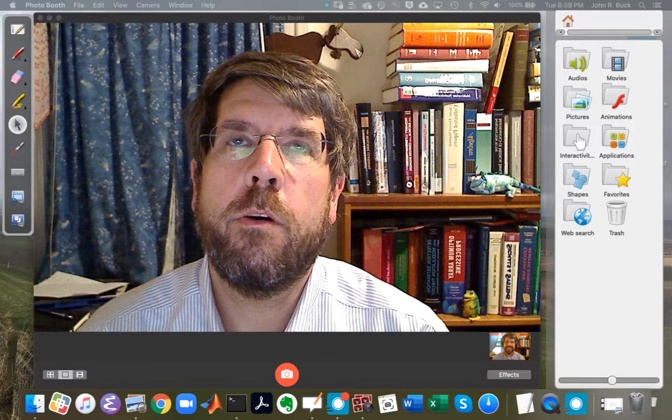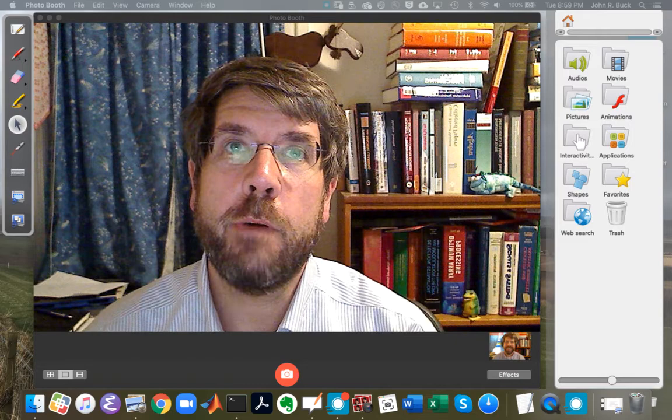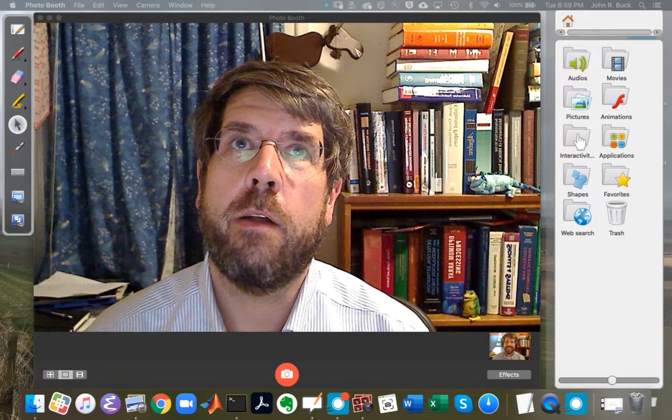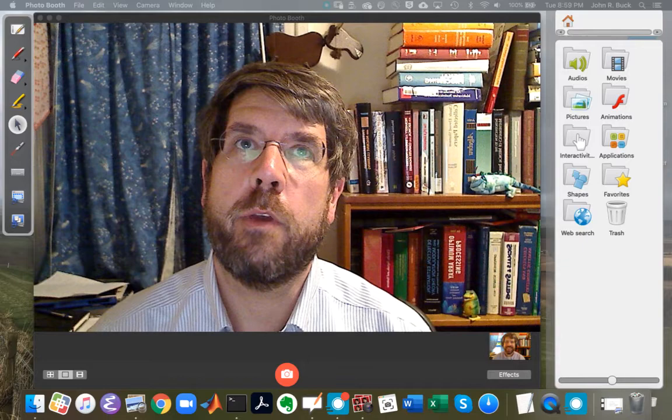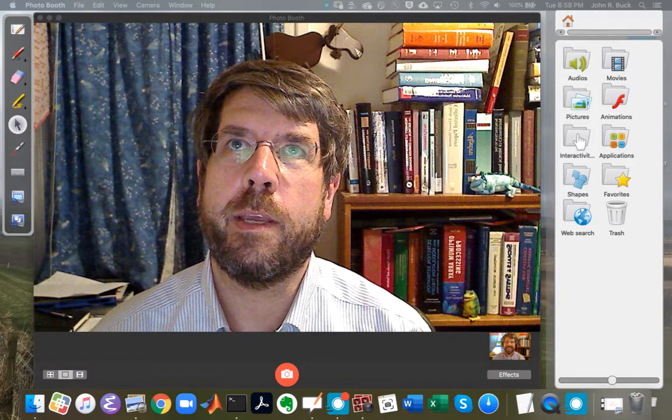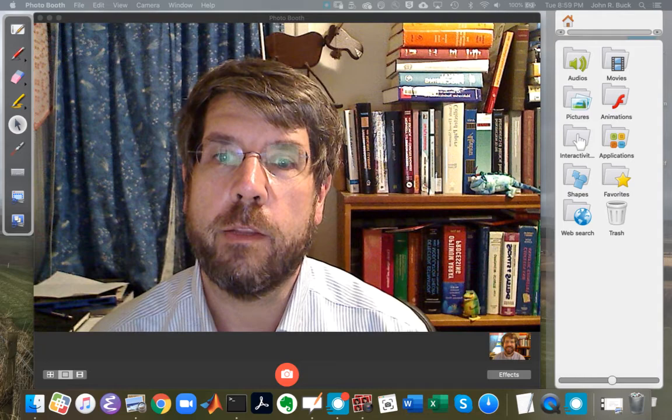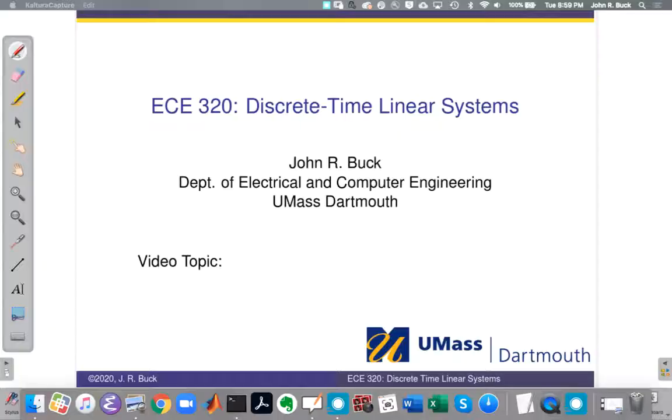This is John Buck. I'm here with another discrete time linear systems video. In this video, we're going to go through an example of using the discrete time Fourier series synthesis equation. So that's the version where we have the a sub k's and we need to find the signal in the time domain. So we're synthesizing the time domain signal from the Fourier series coefficients. And we'll break that down and go through it step by step and show you how important Euler's identity is for finding this.